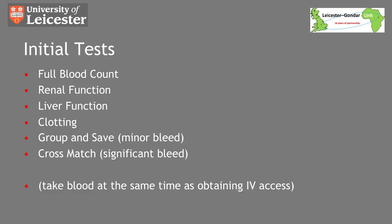Most of the tests on this slide will not come as a surprise and so we will skip through them quickly. It is worth mentioning renal function as we're particularly looking for the level of urea, which is often raised out of proportion to the creatinine in a patient having an upper GI bleed, and also to remember to send blood for a group and save or cross-match depending on the severity of bleeding. Do remember to place at least one large IV cannula at the same time as taking your blood tests.